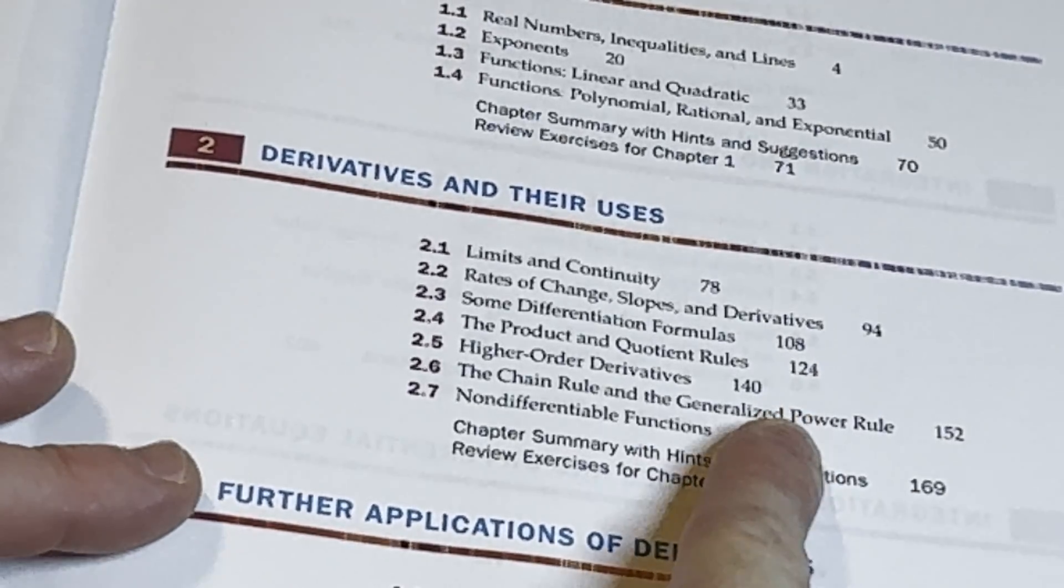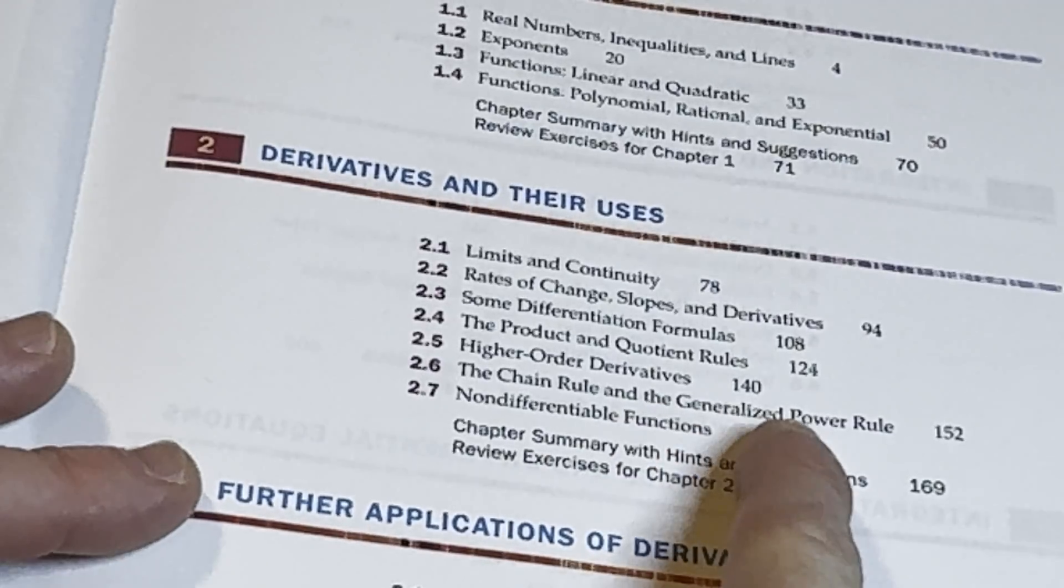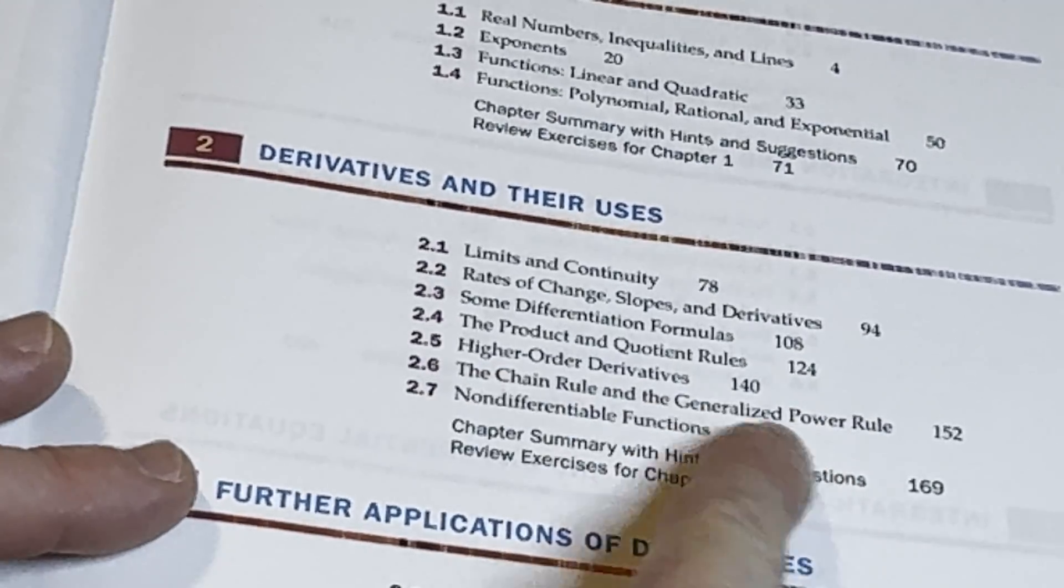Generalized power rule. I remember seeing that in this book, I think, for the first time. I was like, oh, okay, all right. That's what they call a generalized power rule. Isn't it just the chain rule, but it's a special case, right?